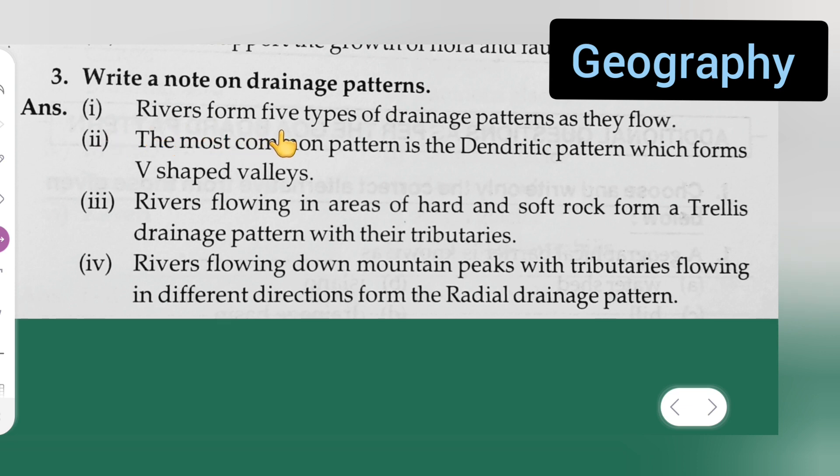First point says that rivers form five types of drainage patterns as they flow. Second point says that the most common pattern is the dendritic pattern which forms V-shaped valleys. Third point says that rivers flowing in areas of